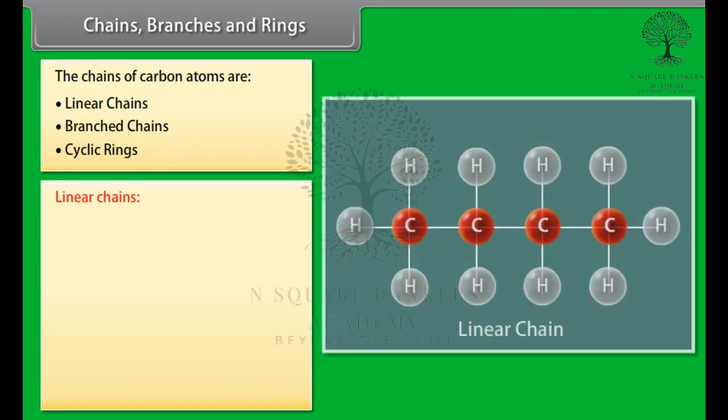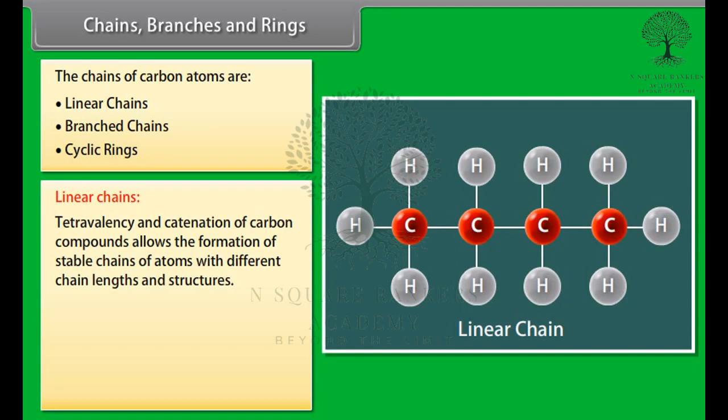Linear chains. Tetravalency and catenation of carbon compounds allows the formation of stable chains of atoms with different chain lengths and structures.